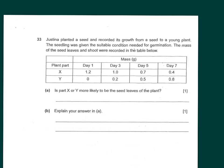Question 33: Justina planted a seed and recorded its growth from seed to young plant. A young plant is also called a seedling. The life cycle starts from a seed, then to the seedling or young plant, then to the adult plant. The adult plant bears flowers and fruits that give the seeds. This is the life cycle of a plant — three stages.